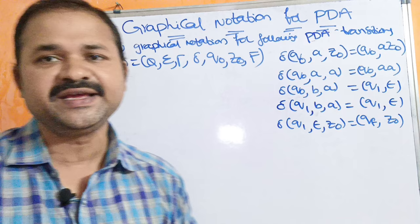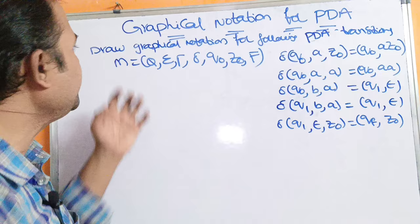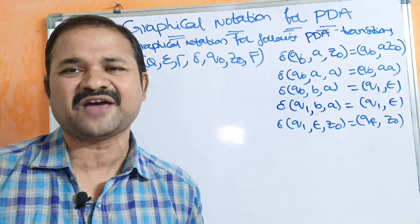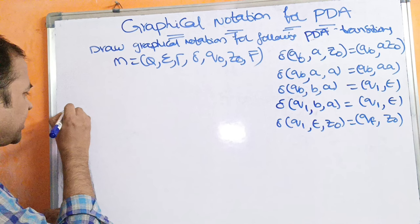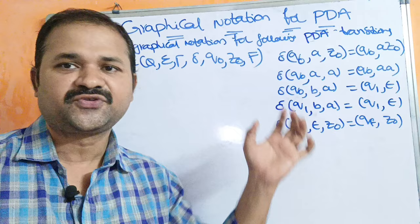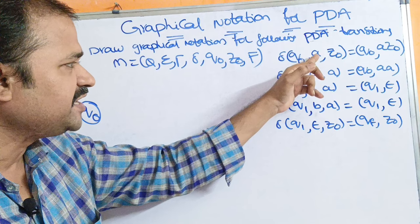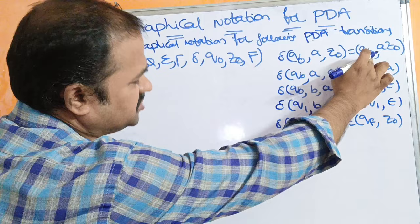Now let us construct the transition diagram. Graphical notation is nothing but a transition diagram — there is no difference between graphical notation and transition diagram; both are same. Q0 is the initial state, just like in DFA. The input symbol is A, and the destination state is also Q0, so this is a self-loop.